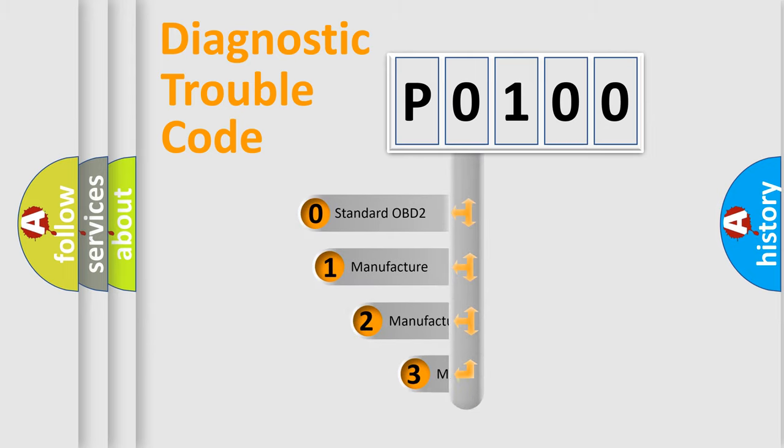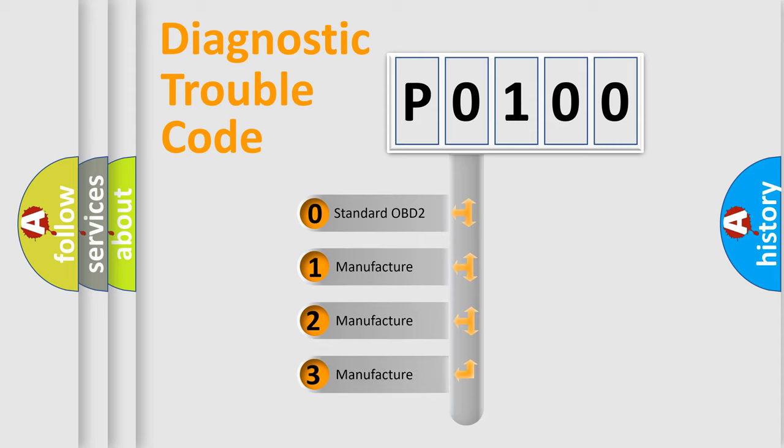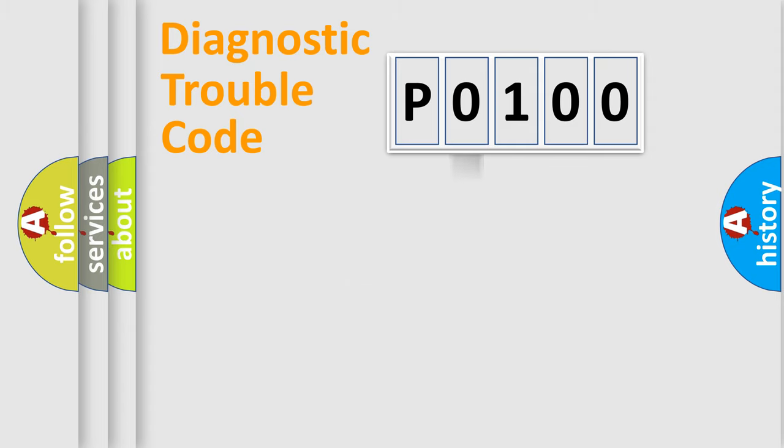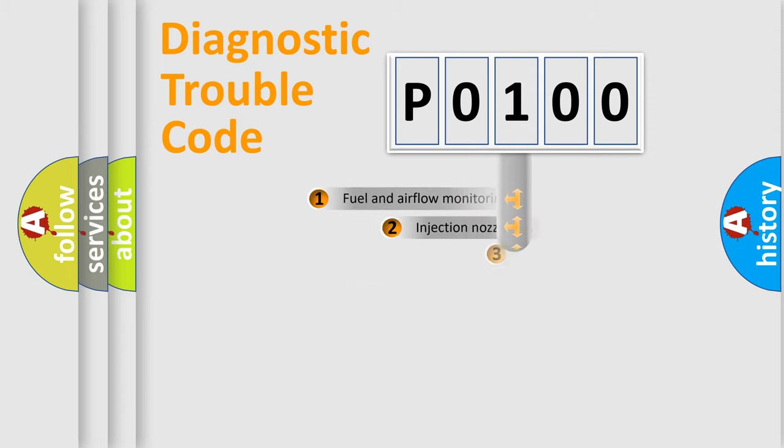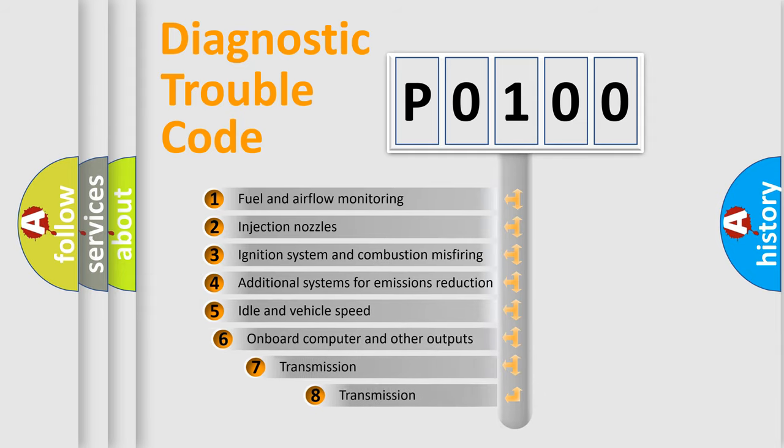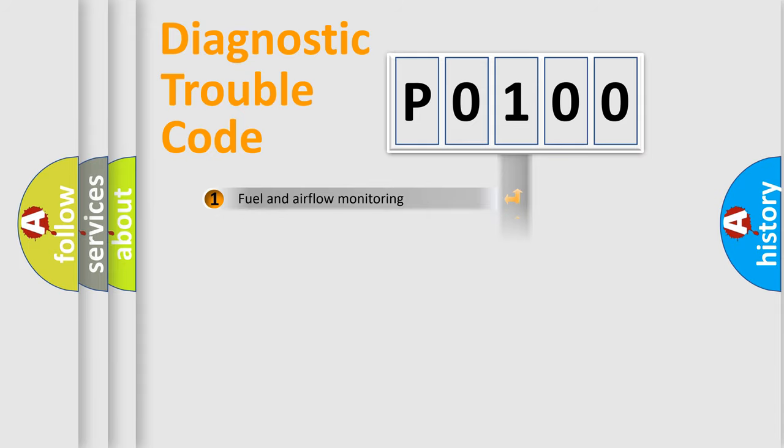If the second character is expressed as 0, it is a standardized error. In the case of numbers 1, 2, 3, it is a manufacturer-specific error. The third character specifies a subset of errors. The distribution shown is valid only for the standardized DTC code.